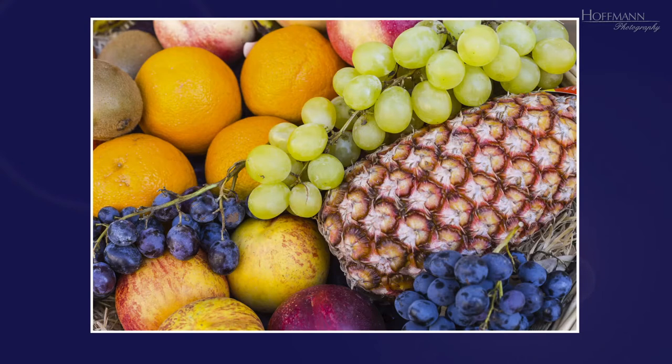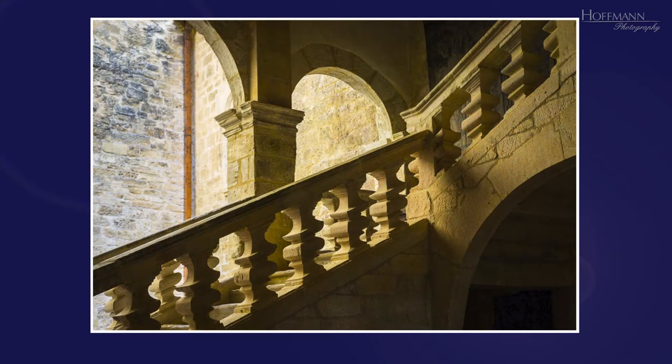Why is it called a normal lens? Well, it's supposed to have roughly the same angle of view as the human eye. That's not strictly correct, but for all purposes it's good enough. Having roughly the same angle of view as the human eye means that the images taken with the normal lens look very natural, without distortion and without forced perspective.